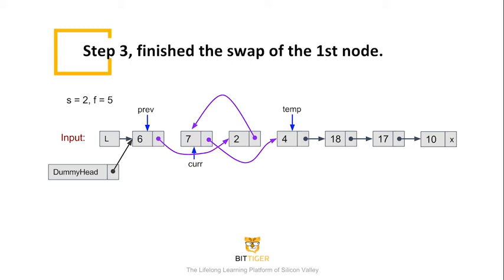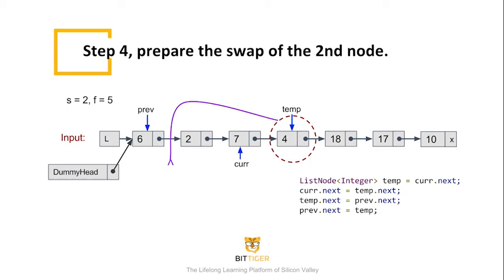Now the list looks like this. The first 2 nodes of the sublist were swapped. Now the cur node points to 7. What we need to do now is move the node 4 up to the head of the sublist, which is right behind the prev node. We do the same swap technique to the list again. We first define a temp node as the next node of the cur node and do the swap as the code shows. After the swap, the sublist becomes 4, 2, 7, and 18.